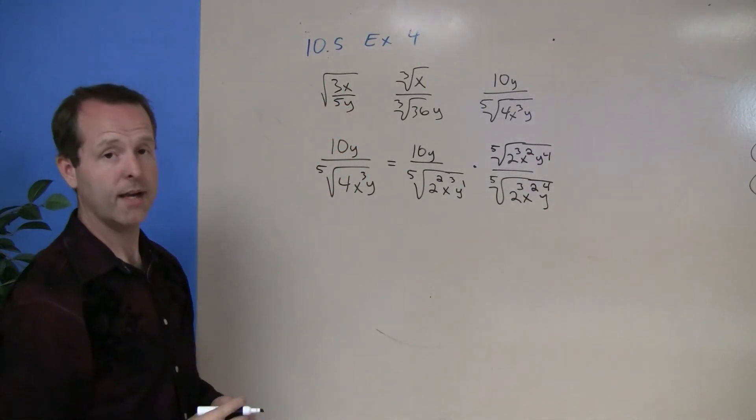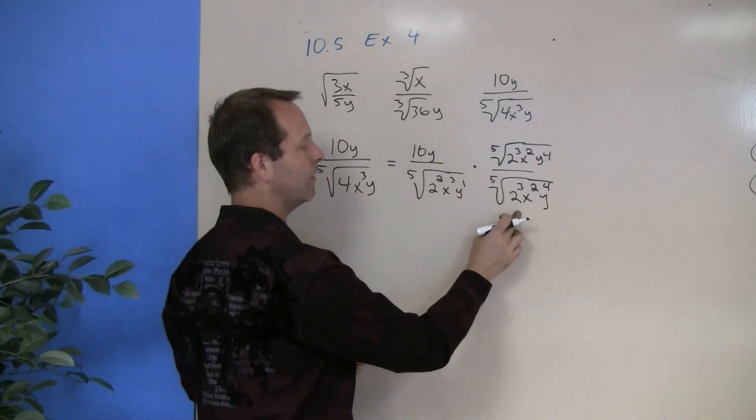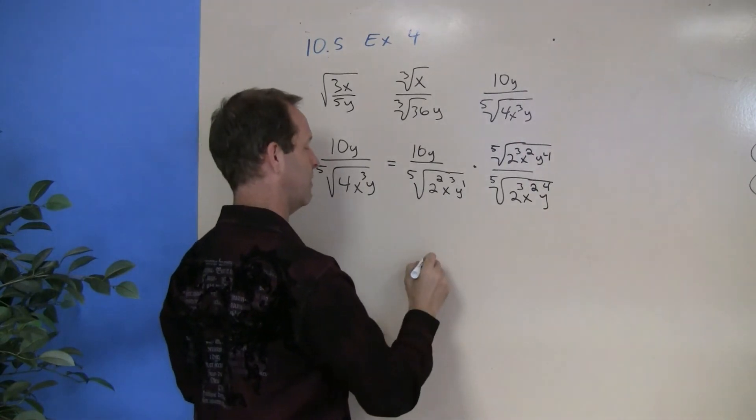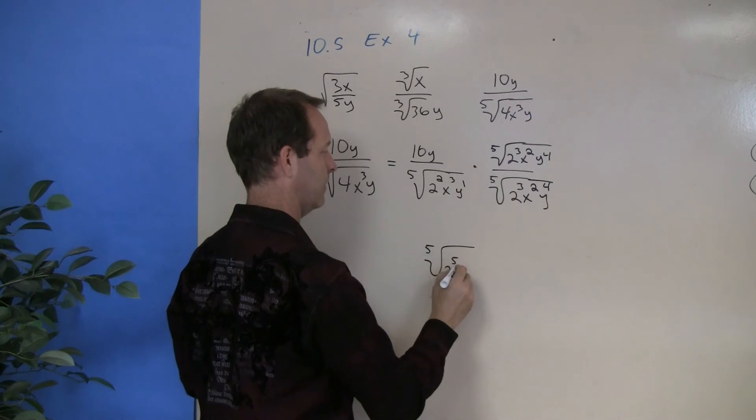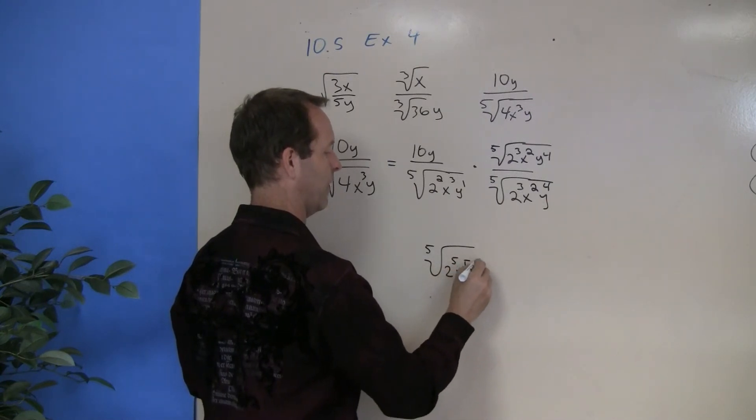So now I can go ahead and multiply those through. Denominator times denominator. Since it's combined, it's going to be the fifth root of 2 to the fifth, x to the fifth, y to the fifth.